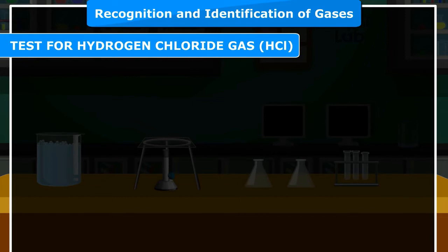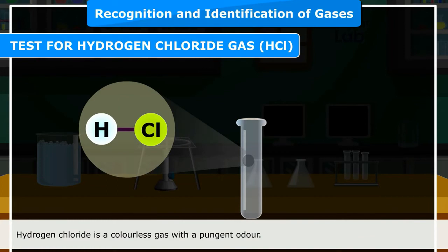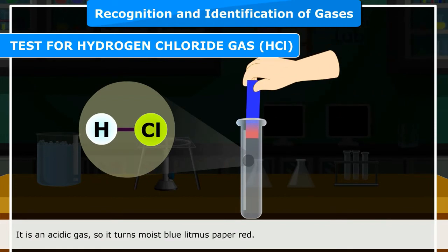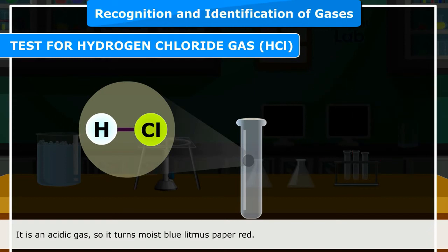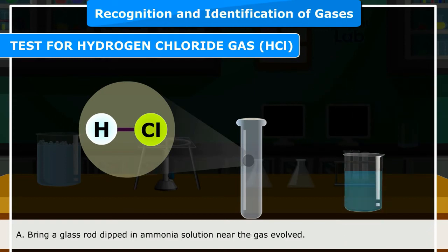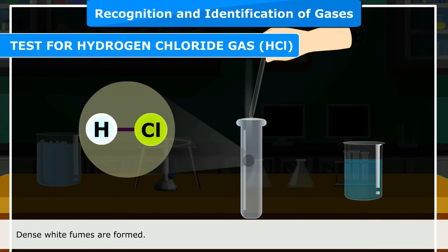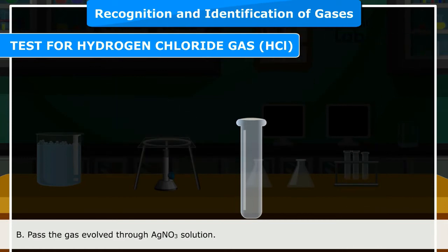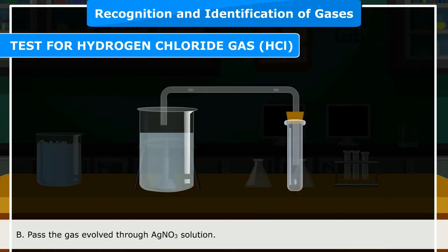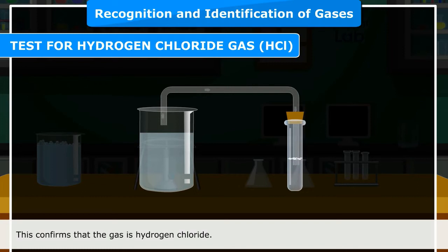Test for hydrogen chloride gas (HCl): Hydrogen chloride is a colorless gas with a pungent odor. It is an acidic gas, so it turns moist blue litmus paper red. Confirmatory test A: Bring a glass rod dipped in ammonia solution near the gas — dense white fumes are formed. Confirmatory test B: Pass the gas through AgNO₃ solution — a curdy white precipitate is formed. Both confirm the gas is hydrogen chloride.